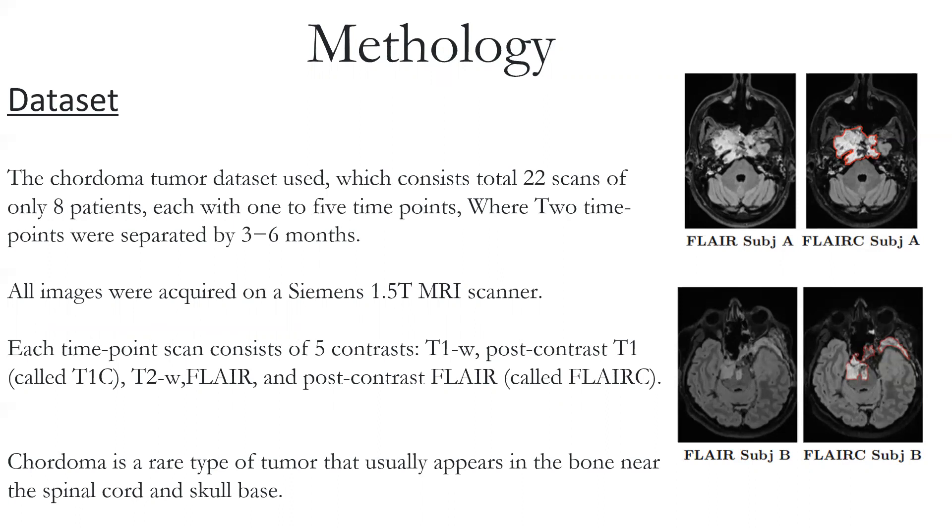All images were acquired from Siemens 1.5T MRI scanners. Each scan consists of five contrasts: T1-weighted, post-contrast T1, T2-weighted, FLAIR, and post-contrast FLAIR which is called FLAIRC. In this paper, they only used FLAIR and FLAIRC contrast images.